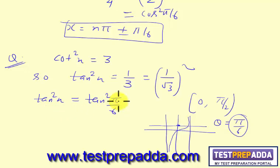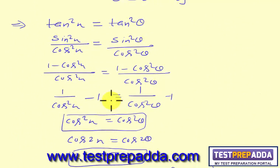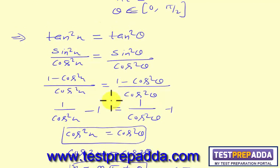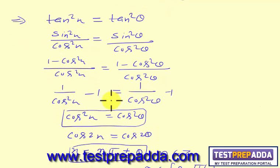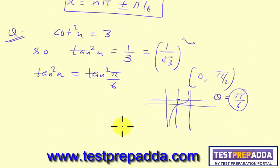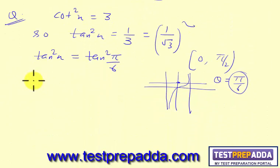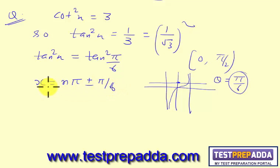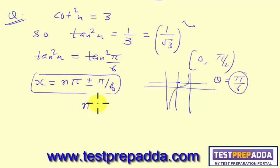Applying the general solution for tan²x = tan²θ — which is the same as for sin² and cos² — we get x = nπ ± θ. So the general solution is x = nπ ± π/6.